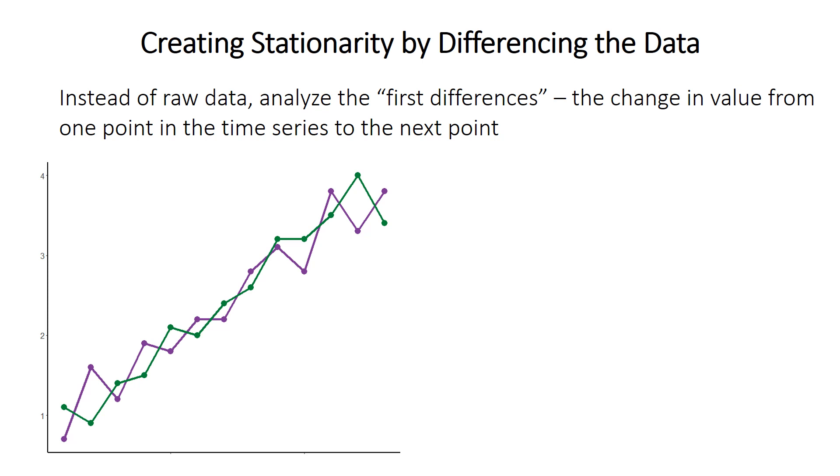So this is called the first difference because it's the difference between adjacent points, only one point apart. It's possible to look at other differences. There's a second difference, between points that are two apart, a third difference, and so forth. But really, first differences is what are almost always used because they're almost always what is all needed to be used.